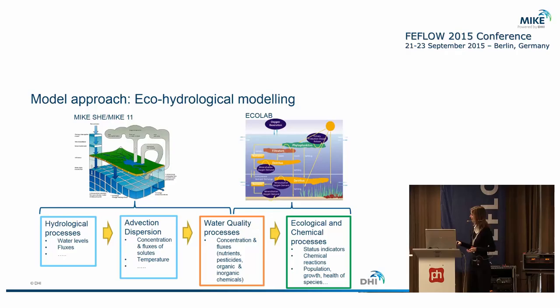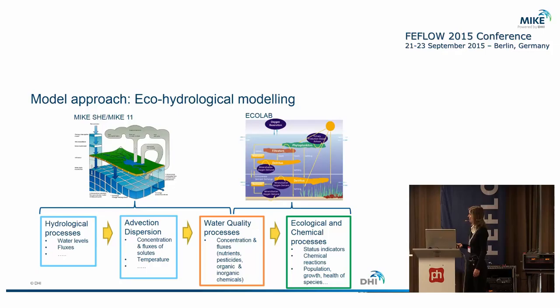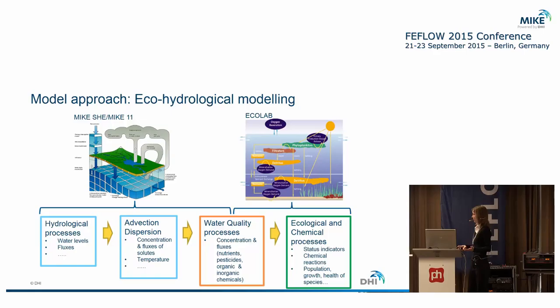For those unfamiliar with Mike SHE, it is a physically-based integrated hydrological model. It has a 2D overland flow description combined with a 1D unsaturated zone model and a 3D saturated zone model. It is also linked with Mike 11, giving a fully hydrodynamic 1D river solution. It handles transport of species — such as nutrients — by advection-dispersion and has its own water quality model, though that model is not particularly flexible and doesn't include all the processes we wanted for our wetland model. So Mike SHE has also been linked to Ecolab, an ecological process-based model.